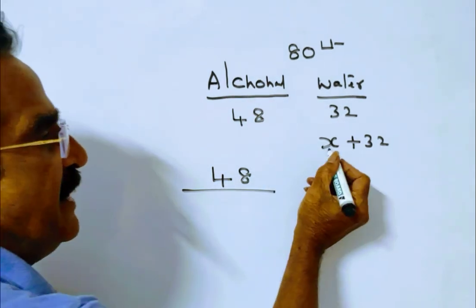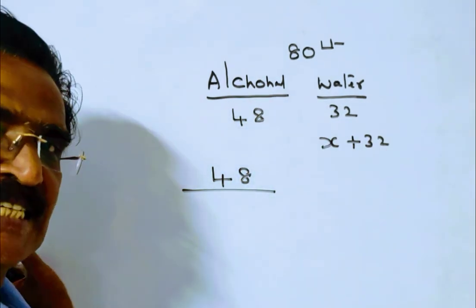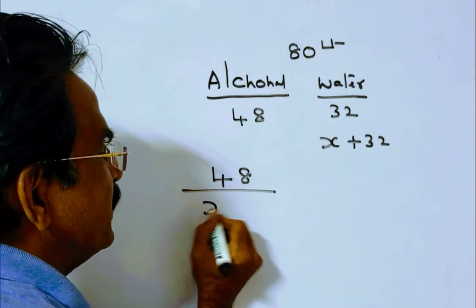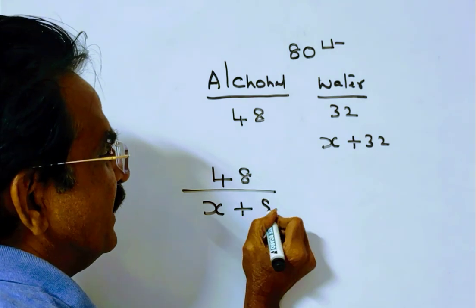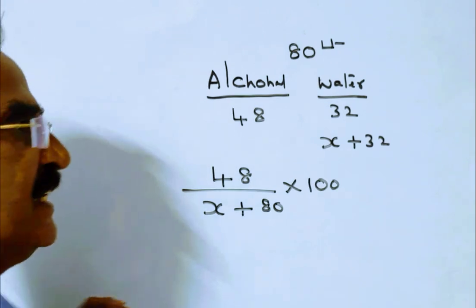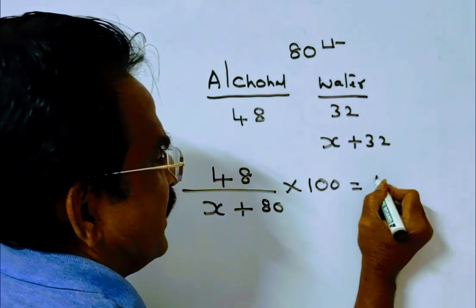Total mixture is x plus 80. 80 liters is the original mixture and we have added x liters of water. So 48 divided by x plus 80, times 100, gives us the alcohol percentage, which is given.